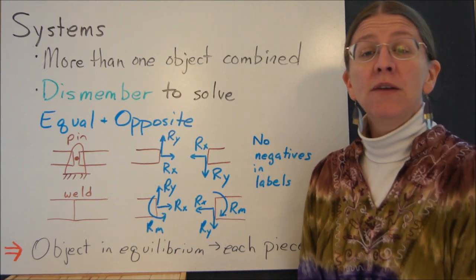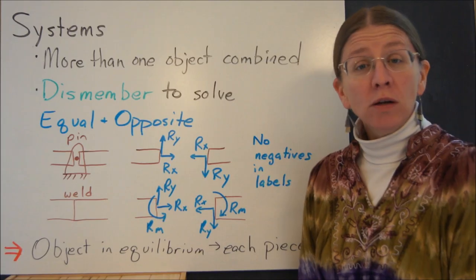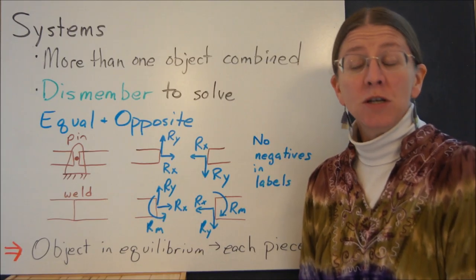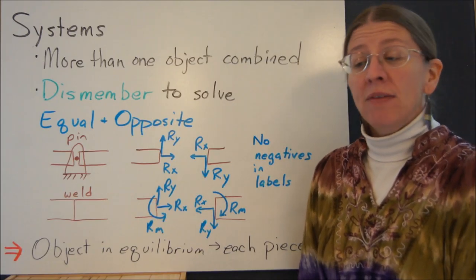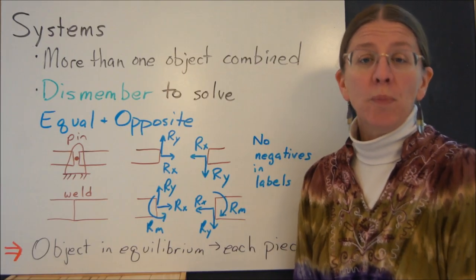In statics, we study three different levels of stuff. We have particles, which we did at the very beginning, and then rigid bodies, which we've done ever since. And then systems are combinations of more than one part.